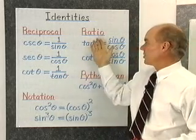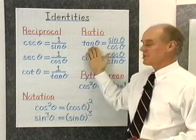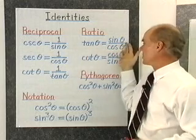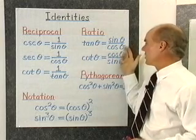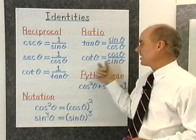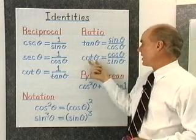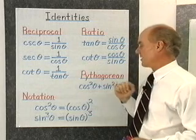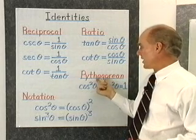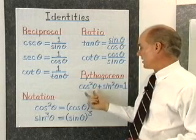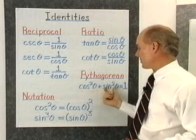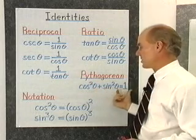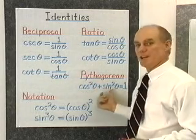Now I have these ratio identities: tangent theta is always equal to sine theta over cosine theta, and cotangent is cosine theta over sine theta. And then I have the Pythagorean identity: cosine squared plus sine squared is equal to 1.